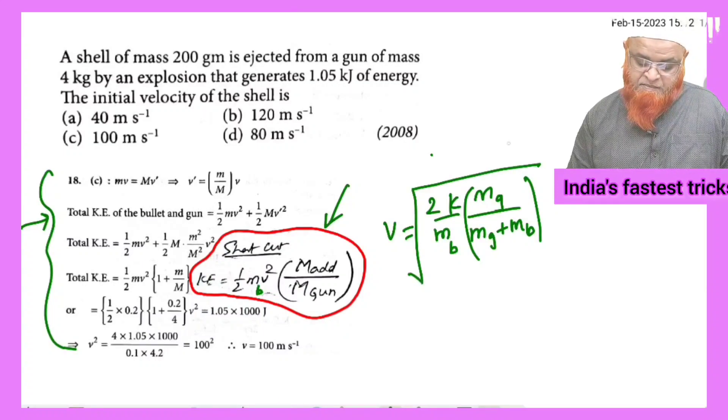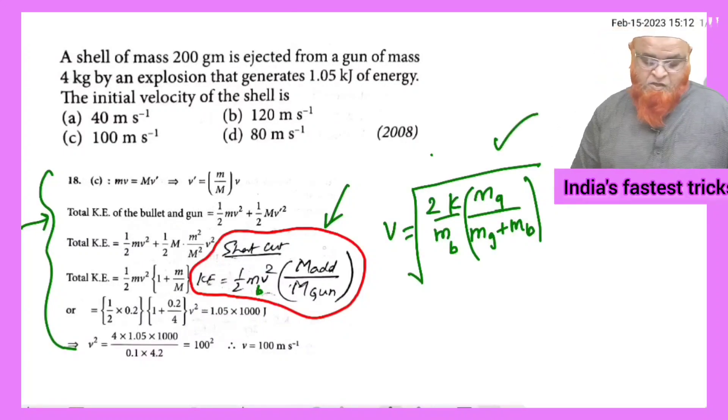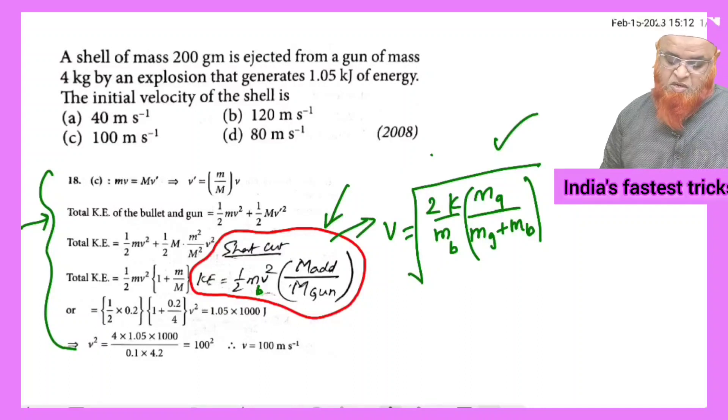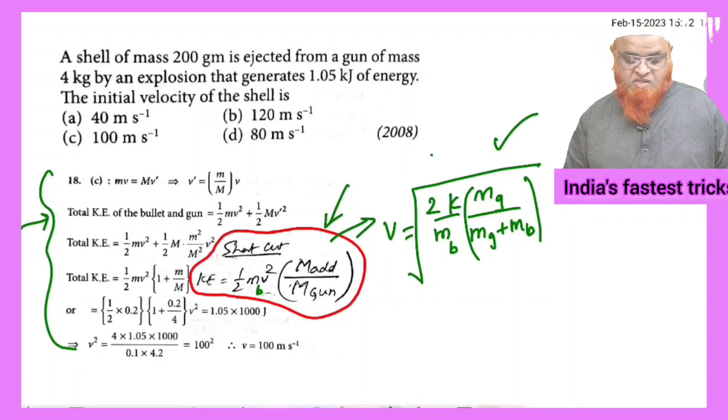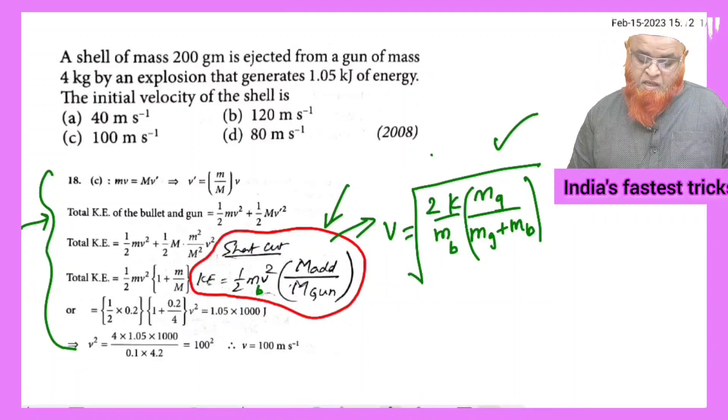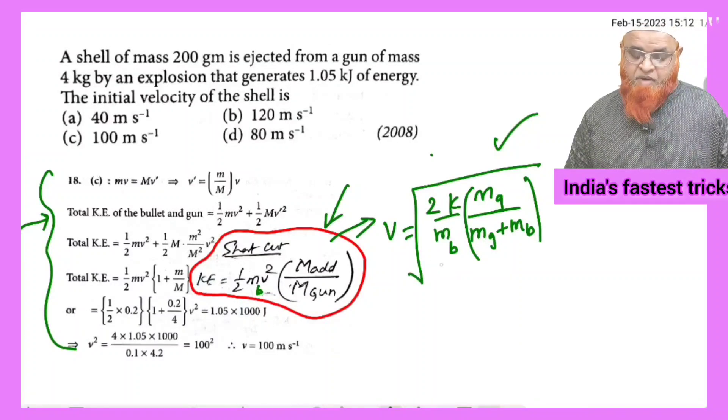This is the shortcut formula. From this formula I have got velocity equals 2K by mass of the bullet.